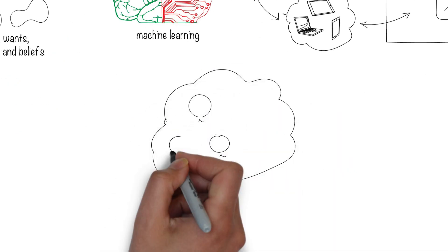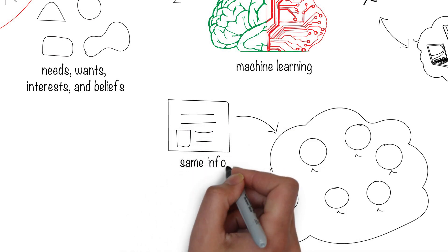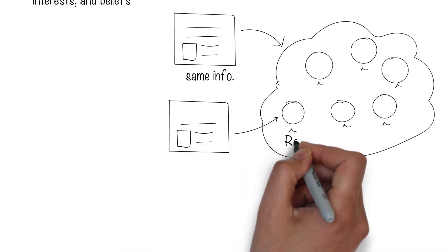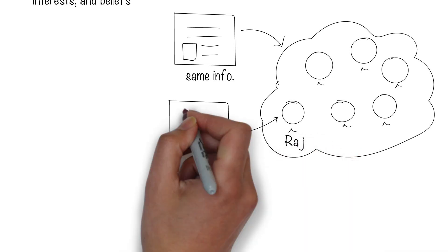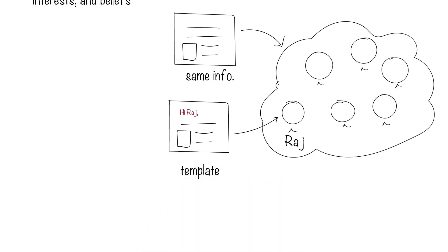In the beginning of the internet age, there was no personalization. Everybody got the same information on the webpage. Slowly, we moved to templates where the blanks could be filled in at the right spots, like your name or other personal details, making it appear like personalization.